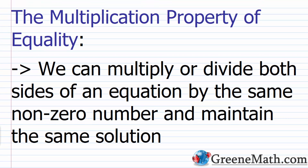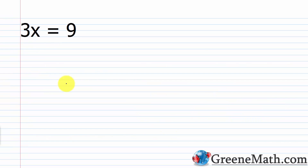Now let's talk about the multiplication property of equality. We can multiply or divide both sides of an equation by the same non-zero number — and that's important, zero is not involved here — and maintain the same solution. If you use 0 to multiply, multiplying 0 by something makes it 0, so 0 won't work. It has to be the same non-zero number.